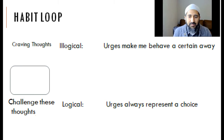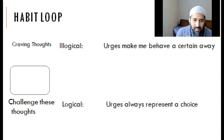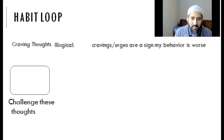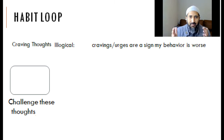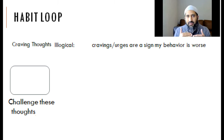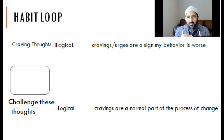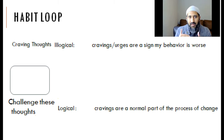And I'll tell you, 80% of this game is making a differentiation between victim and volunteer — that's one of the biggest gems. The third irrational thought is: 'Cravings and urges are a sign that my behavior is getting worse, my addiction is getting worse.' The logical thought to bind that is: cravings and urges are a normal process of changing your behavior, changing your addictive behavior.